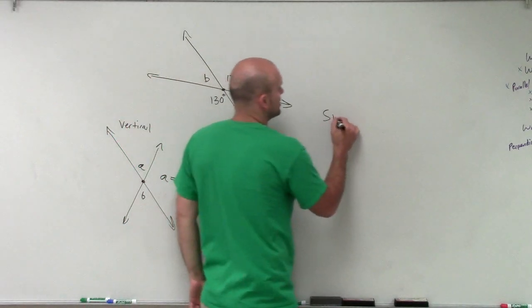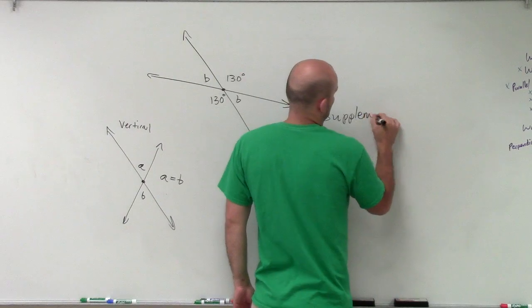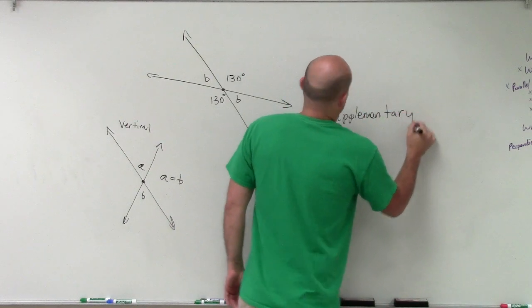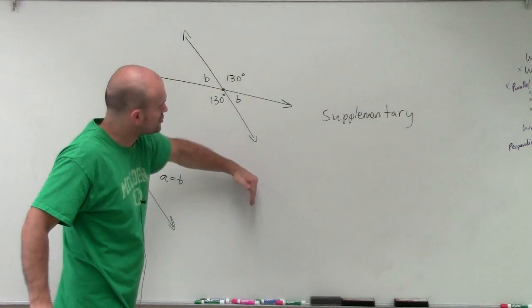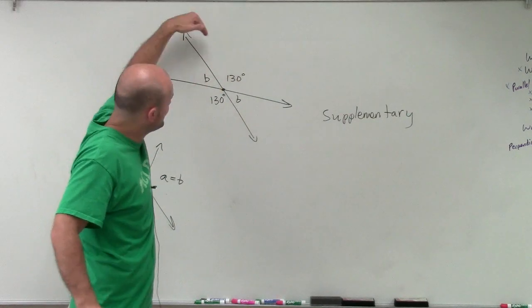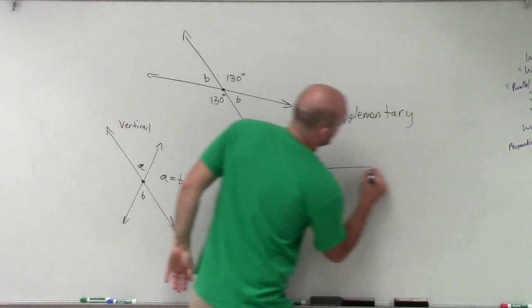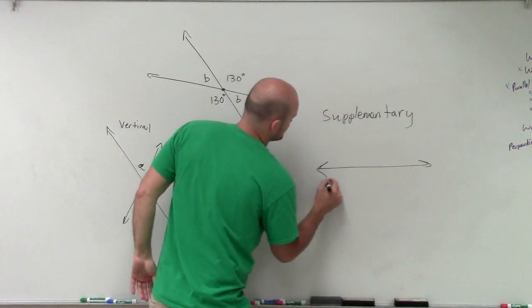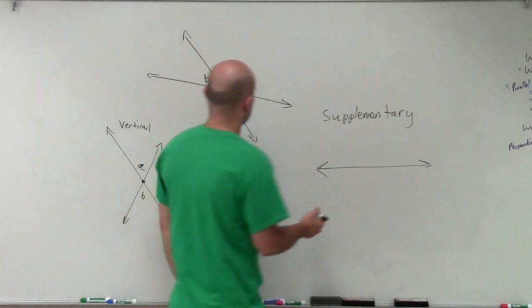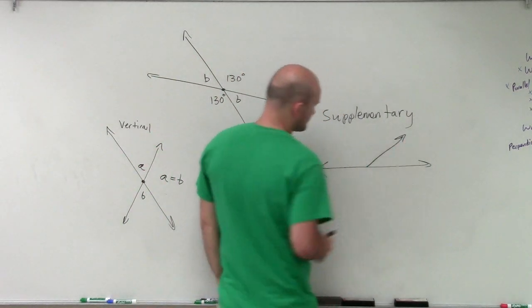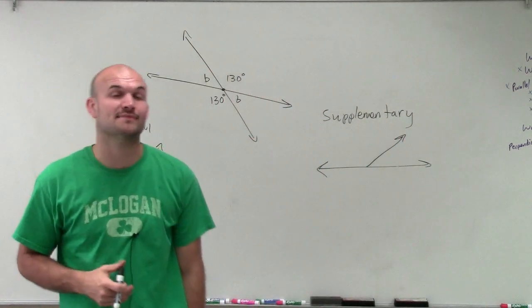All right, so that was with our vertical. Then we talk about supplementary. If you were to forget about one of these lines, we notice that we have a straight line, right? And when we're talking about straight lines, we know we're going to be talking about supplementary angles. Because supplementary angles are going to be two angles that add up to 180.